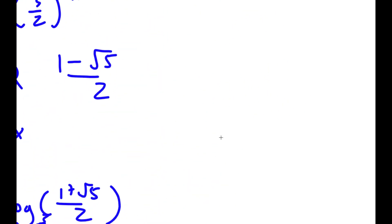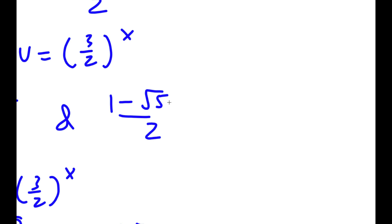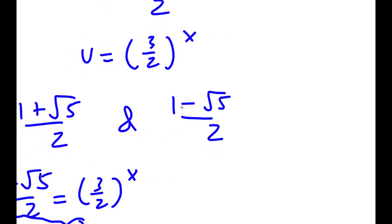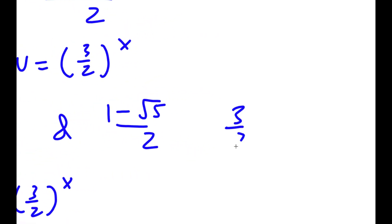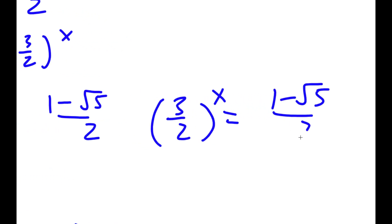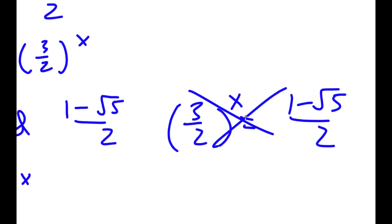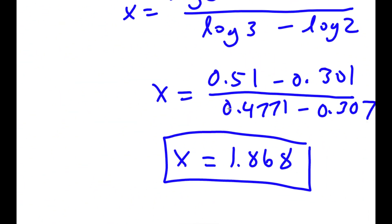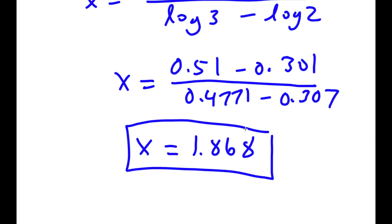Now we look at the second solution: 1 minus the square root of 5 over 2. If 3 over 2 to the power of x equals 1 minus the square root of 5 over 2, this is actually not possible, because 1 minus the square root of 5 is a negative number, and you can't raise a positive base to a power and get a negative result. So this solution has no answer, and our only solution is x equals 1.868.